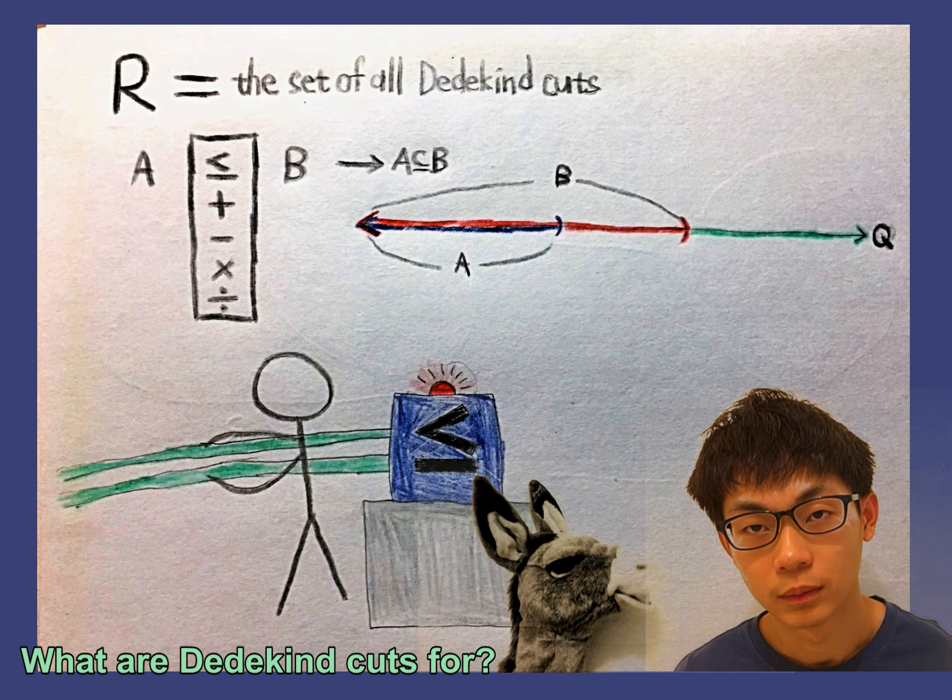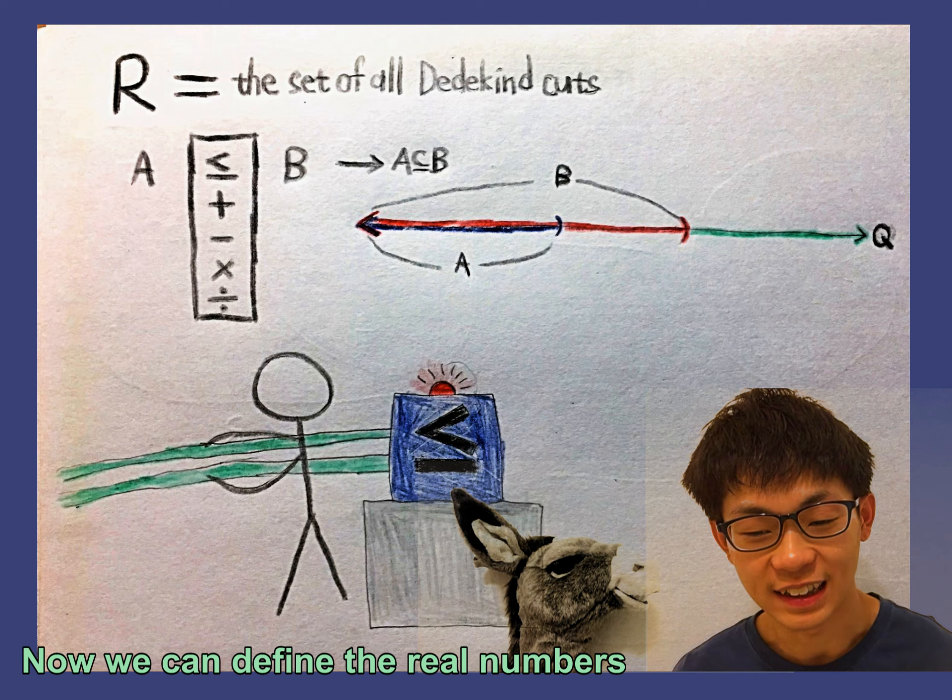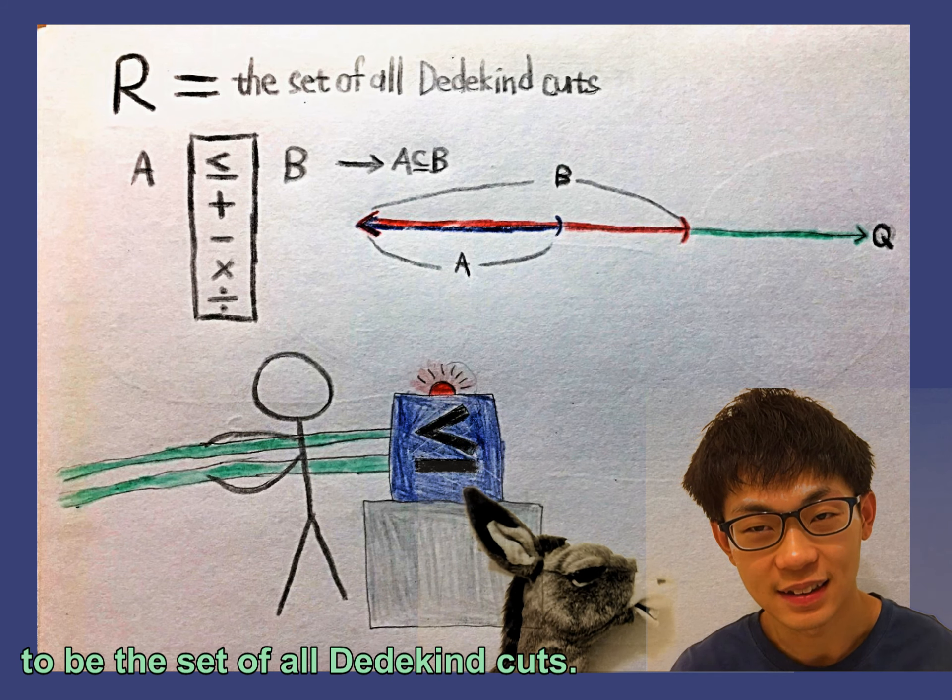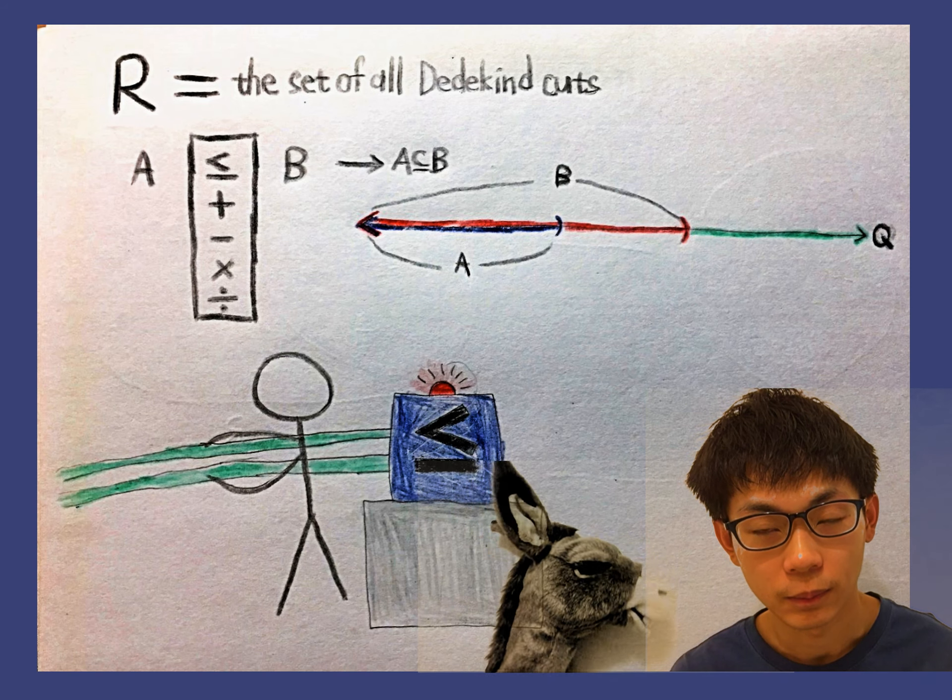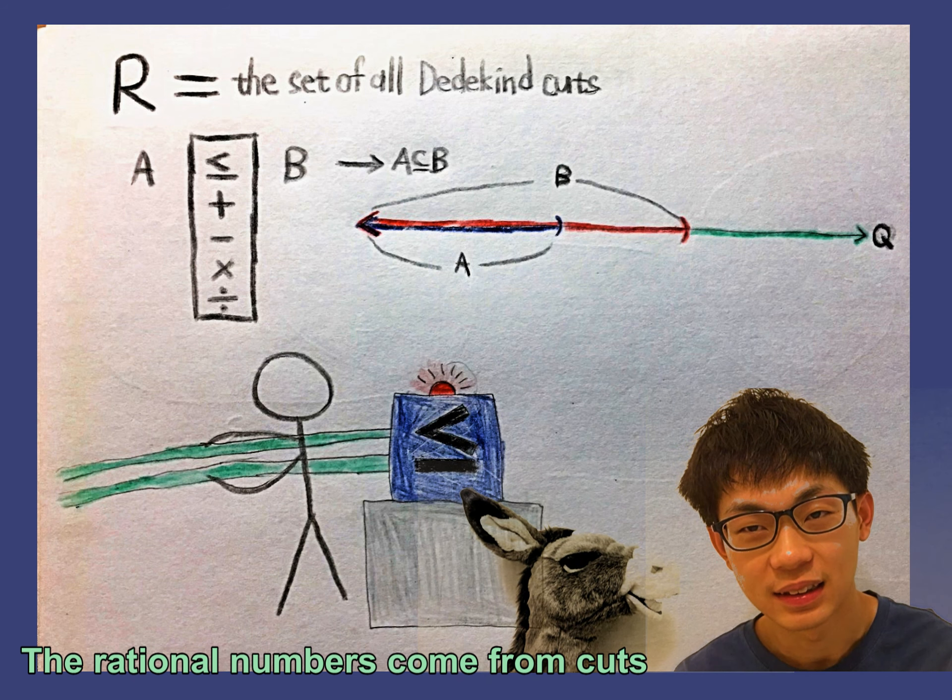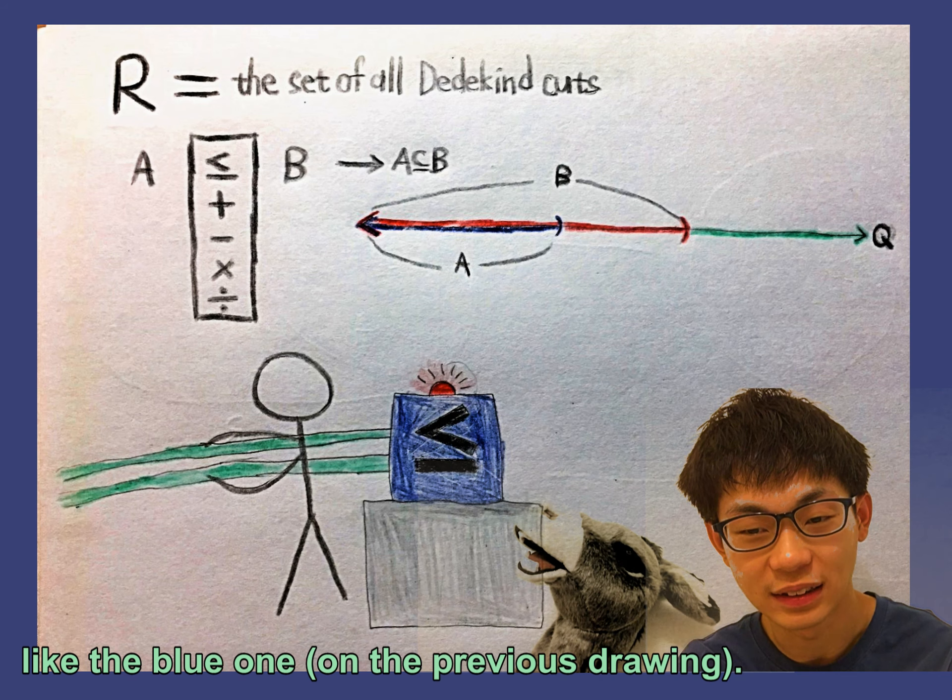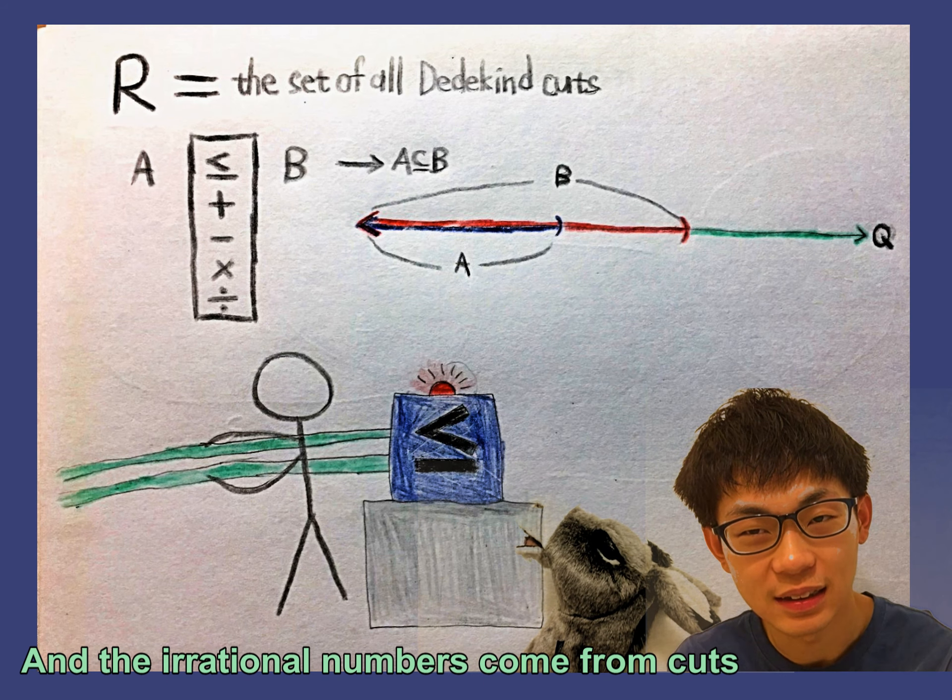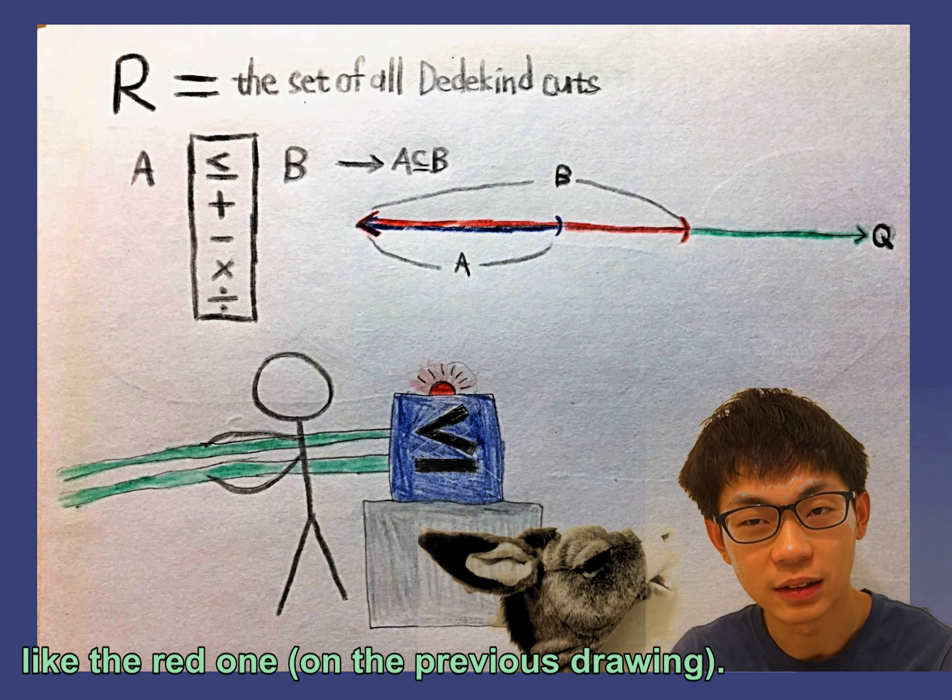What are Dedekind cuts for? Now we can define the real numbers to be the set of all Dedekind cuts. The rational numbers come from cuts like the blue one, and the irrational numbers come from cuts like the red one.